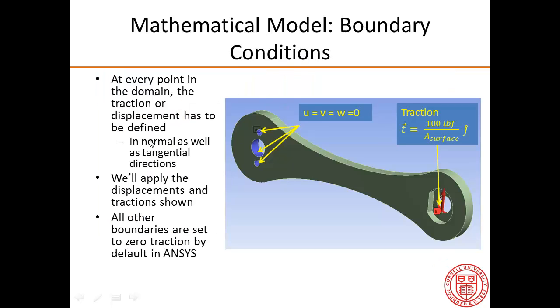The boundary conditions are that at every point in the domain, the traction or displacement has to be defined. And this is true both in the normal as well as the tangential direction. And we'll apply the displacements and tractions as shown. So these three holes are going to be fixed, so all components of the displacements are going to be 0 here.